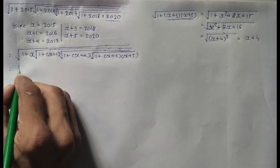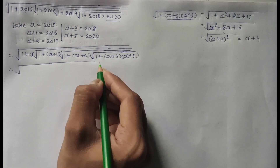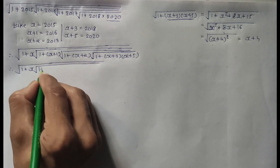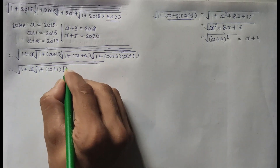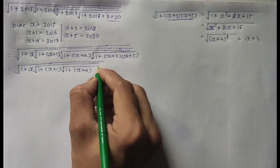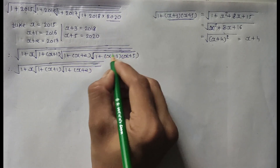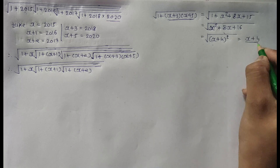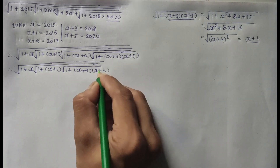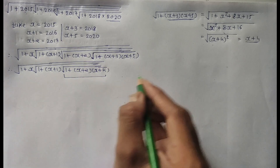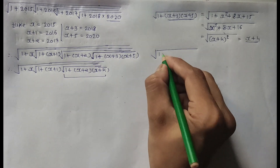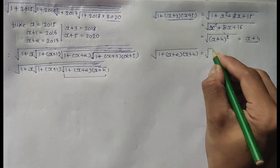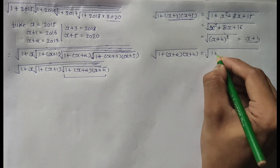Therefore, the expression becomes: square root of 1 plus x, times square root of 1 plus (x+1), times square root of 1 plus (x+2), and the inner term square root of 1 plus (x+3)(x+5) equals x plus 4. So just multiply by x plus 4. Now start from this next inner term.